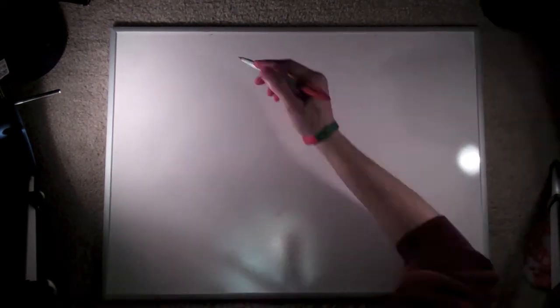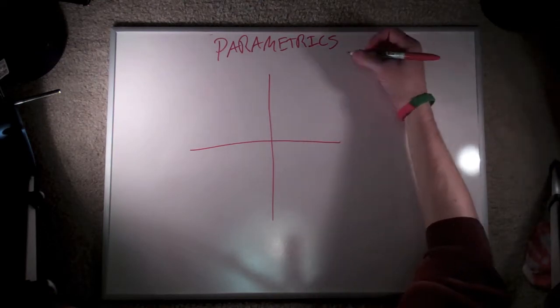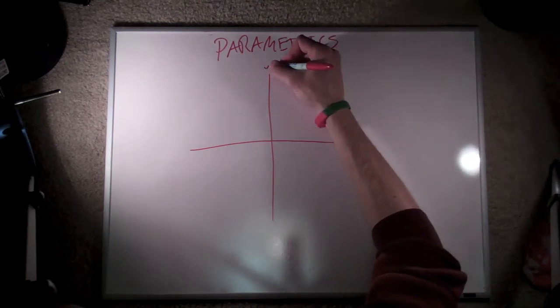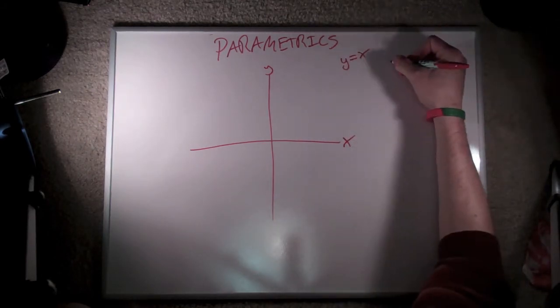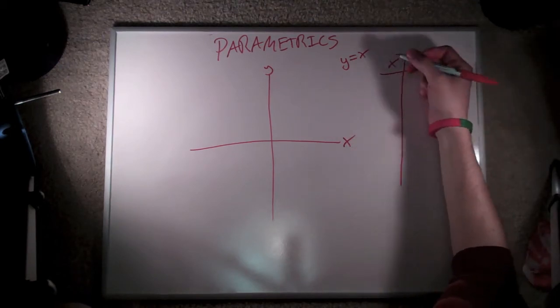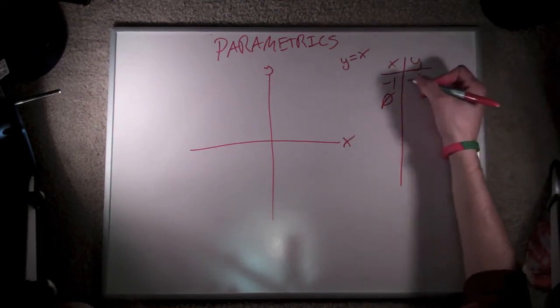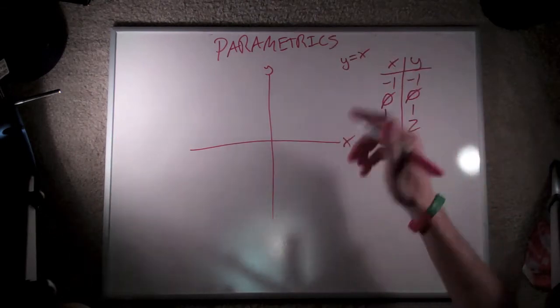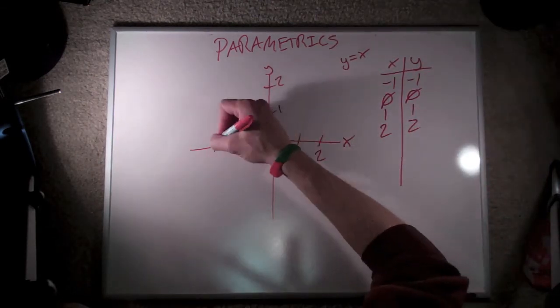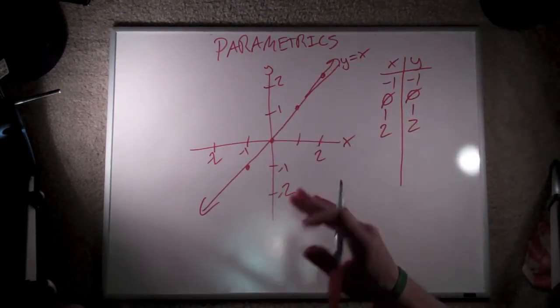We're going to start off with a little bit of review from high school geometry, algebra, and probably a little bit of trig. Specifically, here's what happens if we try and graph out an equation based upon our old-school way, which is we have a y and an x-axis. I'm going to graph out the simplest equation I can think of, which is y equals x. I'm going to make a table of the different values. When x equals negative 1, y has to equal negative 1 too. When x is equal to 0, y is also equal to 0. x1, y1, x2, y2 — you get the idea. I'm going to go ahead and graph out the results of this.